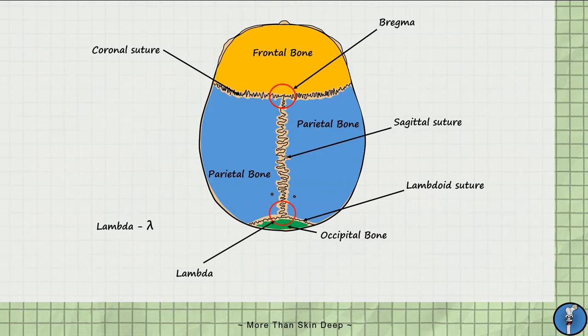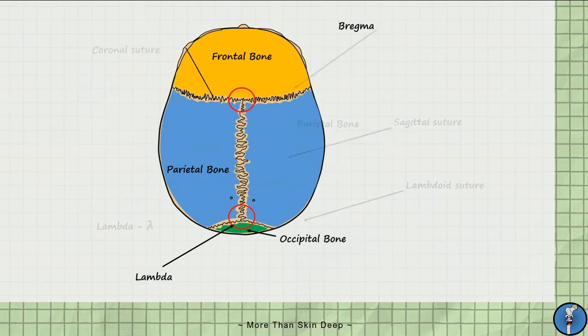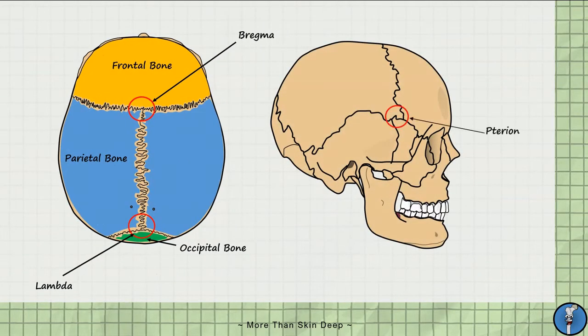An important junction for sutures is the pterion, which is located on the lateral aspect of the head. Pterion is Greek for wing. Hermes, the messenger of the Greek pantheon, is commonly depicted with wings attached at the pterion. It is important because a crucial vessel, the middle meningeal artery, lies underneath the pterion.